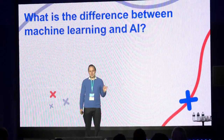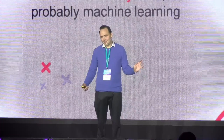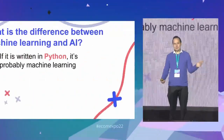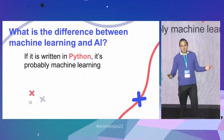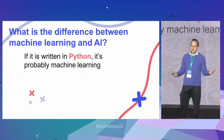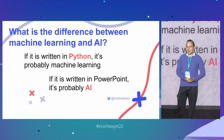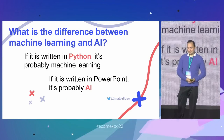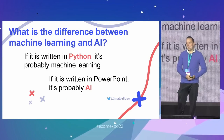What is the difference between machine learning and AI? If it's written in Python, in code, it's probably machine learning. If it's written in PowerPoint, just like here, it's probably AI.